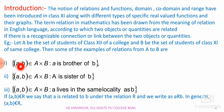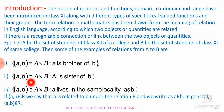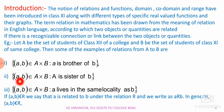R = {(a, b) ∈ A×B such that a is a brother of b}. The relation between a and b here is a family relation. Another is {(a, b) ∈ A×B such that a is a sister of b}. And {(a, b) ∈ A×B such that a lives in the same locality as b}. Such kinds of relations are social relations. Similarly, we are going to study mathematical relations between the two elements of a given set.